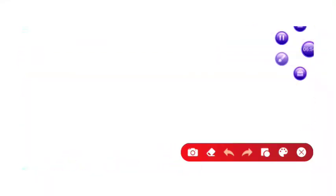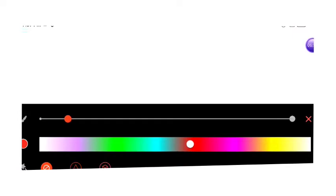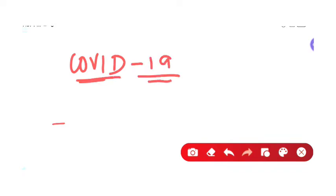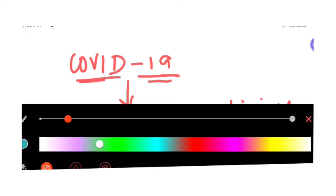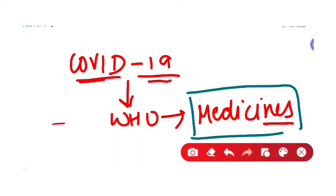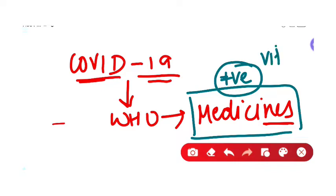The best example for this is COVID-19. You have seen that COVID-19 affected us very badly over the last two years. WHO prescribed some medicines at that time — vitamins, minerals — to provide protection. Your immunity was not strong enough initially, so these medicines were very important.